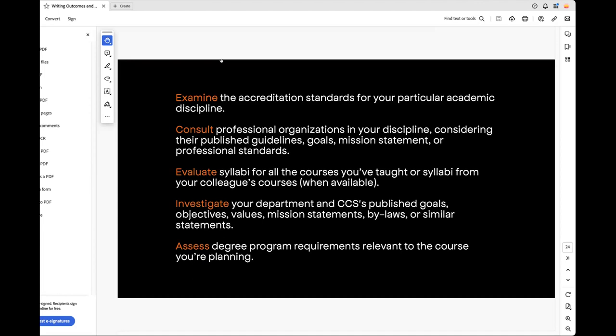As Caleb alluded to with liberal arts, there are established course learning outcomes that they have established. My department does as well. I'm sure most every department, if not all, have that as well. So make sure that you know those and that really sets an opportunity for you to have great discussions with your department chair while developing this. Investigate your department and CCS's published goals, objectives, values, mission statements, bylaws, or similar statements, i.e. the North Star, right? We're working on the strategic plan right now. Be aware of what's going on and participate in that process. That will inform that course at the grassroot level of what we're doing here at the college. And then assess degree program requirements relevant to the course you're planning.